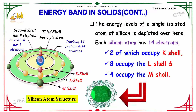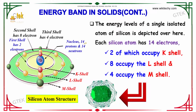Each silicon atom has 14 electrons. 2 electrons in the K shell — the innermost shell is called the K shell. 8 electrons occupy the L shell, and 4 electrons occupy the M shell. This is the structure of silicon.